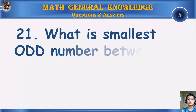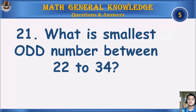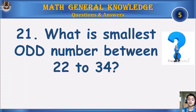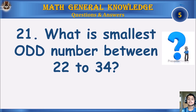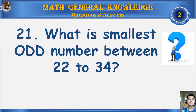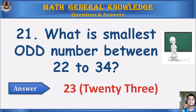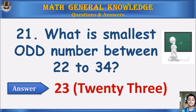What is the smallest odd number between 22 to 34? Your time starts. Answer: 23.